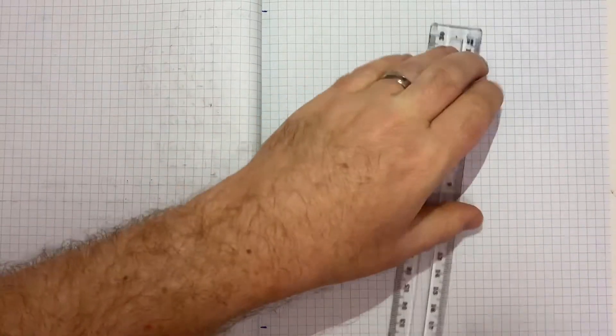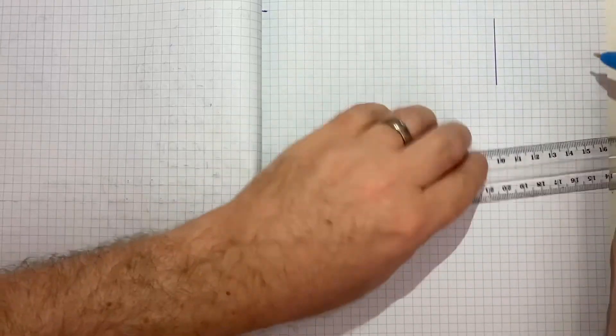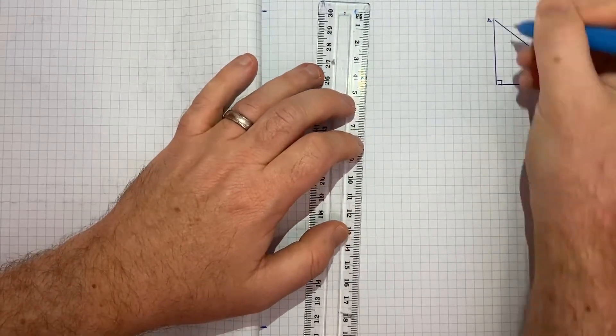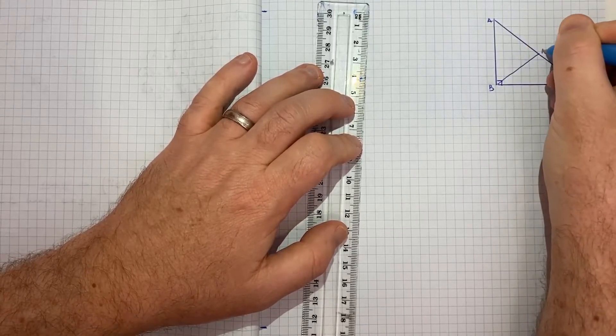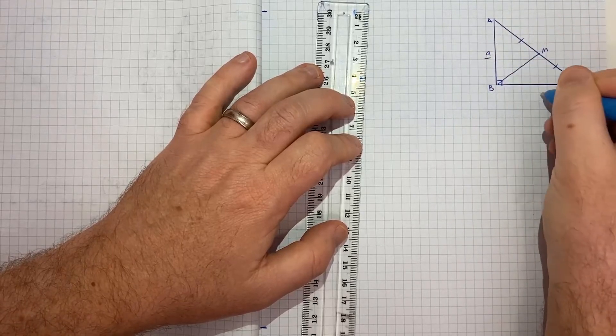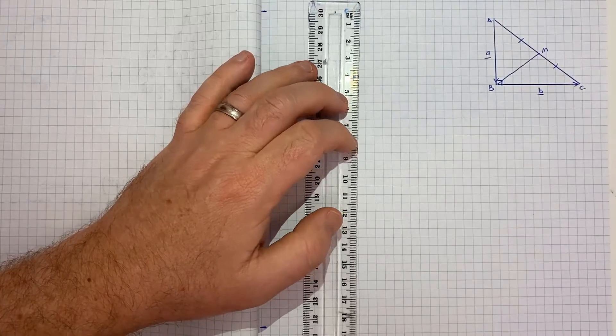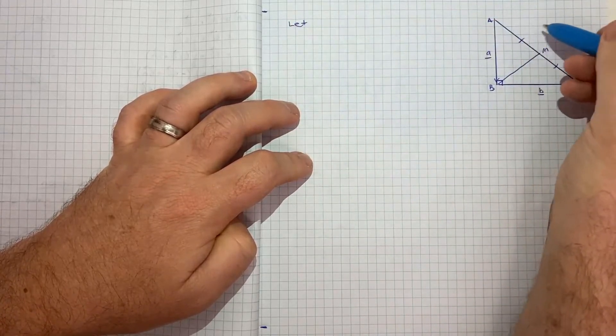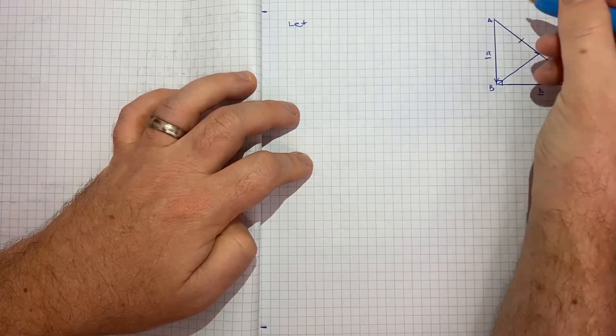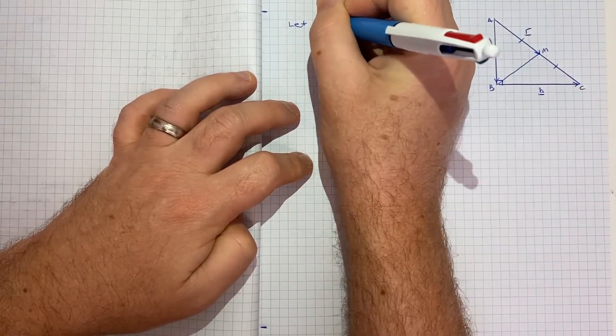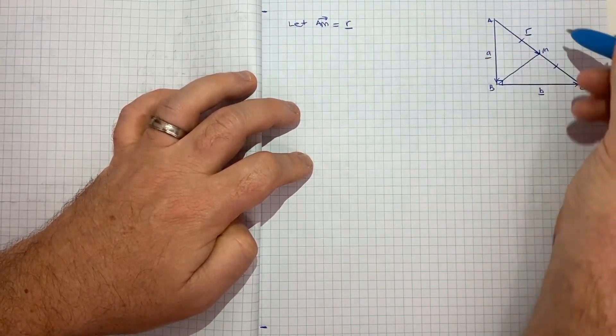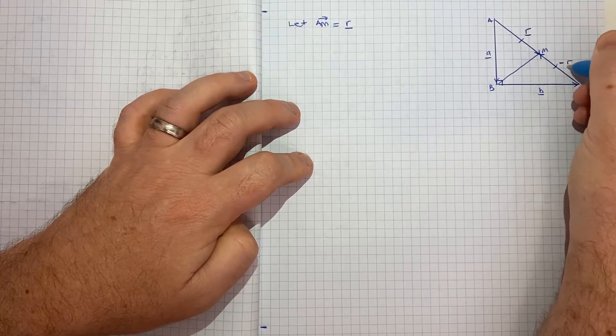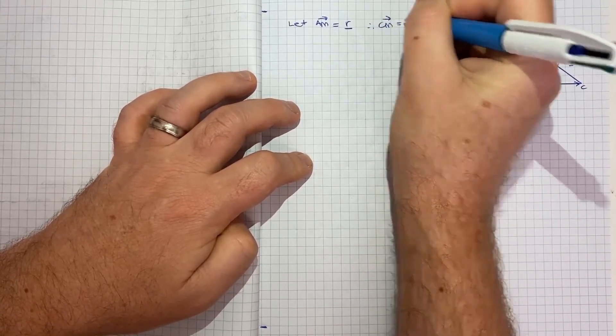So if I just go to the next page, I'll draw the diagram up again just so I can point to it. We've got a, b, c, m. We had our vector a, vector b. Now here, to start with, what we can do is we can let a m, so a to m, let's let that be some vector, I'll call it r. So let vector a m be r. And if that's the case, if a to m is r, c to m is the same magnitude, we know that, but the opposite direction, so negative r. So therefore c m is negative r. And let's let the vector m to b, let's let that be p. So let vector m b equal p.